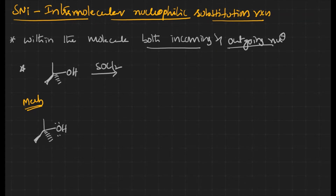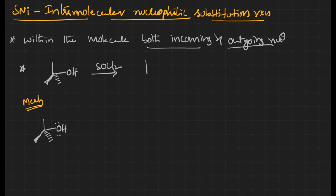Generally, when alcohol reacts with SOCl2 it forms a retention product — meaning the configuration of the substrate and the product is going to be the same.